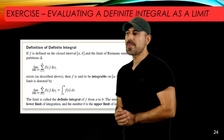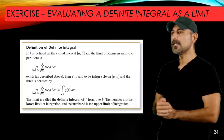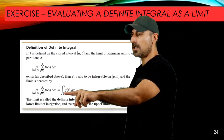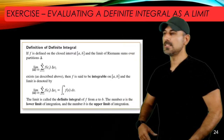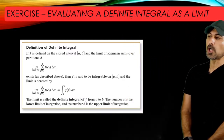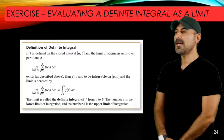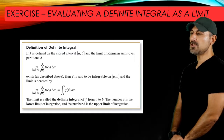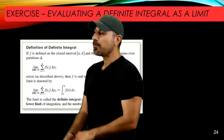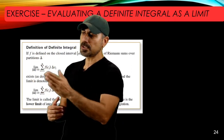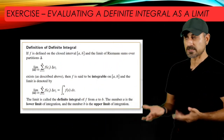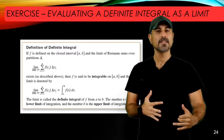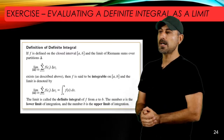If this limit exists, we say that f is integrable on the closed interval [a, b], and the limit is denoted by the integral notation: the integral from a to b of f(x) dx. This limit is called the definite integral of f from a to b, where a is the lower limit and b is the upper limit of integration. For our example, we'll take a partition of the given interval, form the Riemann sum, then let n go to infinity to find the value of the limit.